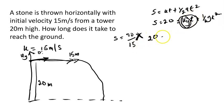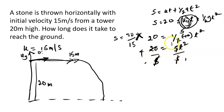So 20 will be equals to half g is 10 times t squared. So 20 is equals to, this is half, so 2 into 10 is 5. That's 5t squared. Divide both sides by 5. So 4 equals t squared.